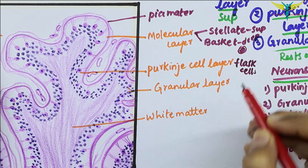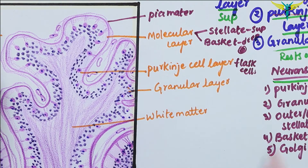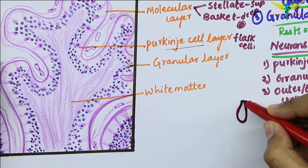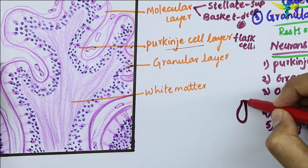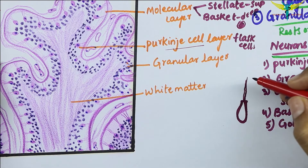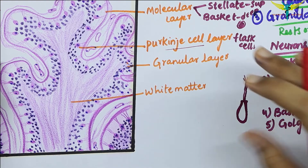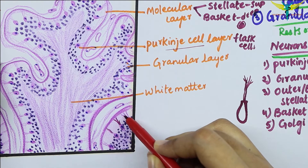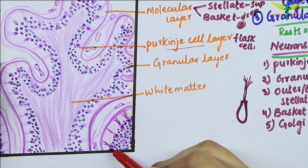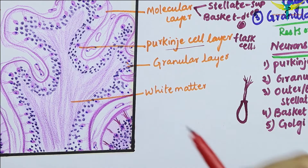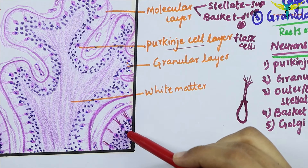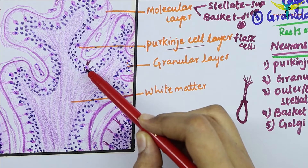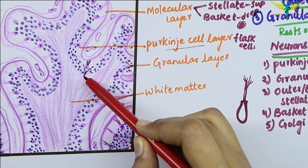Coming to the second layer, the Purkinje cell layer consists of flask-shaped cell bodies called Purkinje cells. The Purkinje cells are evenly placed. The dendrite arises from the neck of this flask-shaped cell and passes upwards into the molecular layer, where it divides and subdivides to form a dendritic tree. The branches of this tree lie in one plane, as you can see in the diagram. The axons of the Purkinje cell layer enter the granular layer and then enter the white matter.